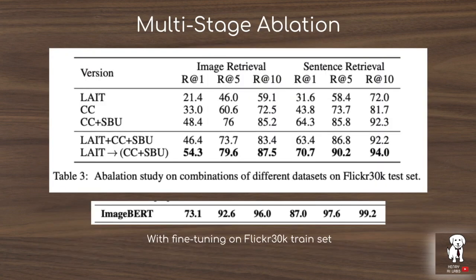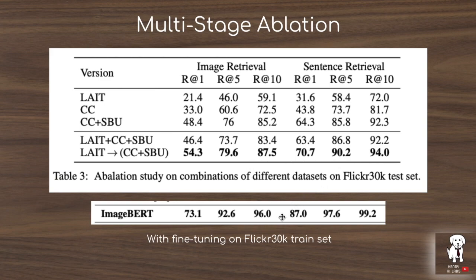The paper shows an ablation of multi-stage training using zero-shot performance on the Flickr 30K test set, demonstrating the difference between training on the LAITE dataset alone, the Conceptual Captions dataset alone, combining additional datasets, and the two-stage pipeline — which significantly outperforms individual one-stage pre-training setups. The performance jump when fine-tuning on the Flickr 30K training set is large, though it's worth noting this is no longer a zero-shot setting, since the model has seen the Flickr 30K data distribution.